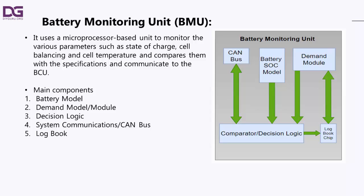For HEV applications, the personality module interfaces with the engine control unit via the CAN bus. Provision is made in this module for setting the desired system SOC operating range and parameters for controlling the power sharing between the electric drive and the internal combustion engine. The demand module also contains a memory block for holding all the reference data and for accumulating historical data used for monitoring the battery state of health.